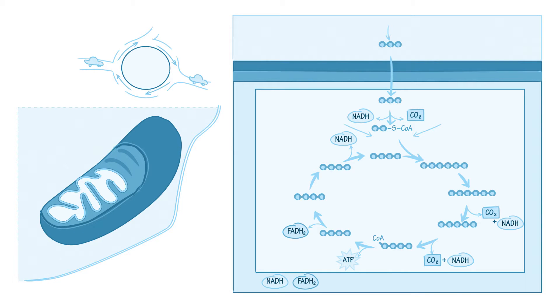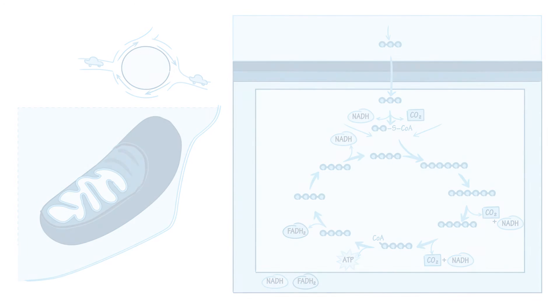Here we'll learn the functions of the citric acid cycle and its role in human metabolism. To begin, let's list the synonyms for the citric acid cycle. Note that it's referred to as the Krebs cycle, after the man who discovered it, and the tricarboxylic acid cycle, because many of its intermediates are tricarboxylic acids.